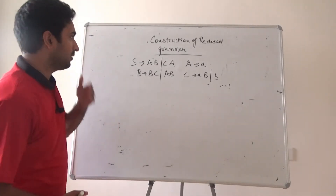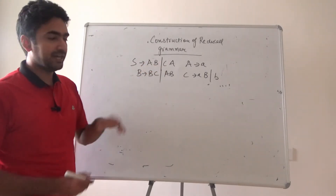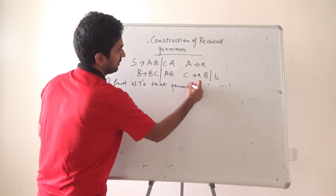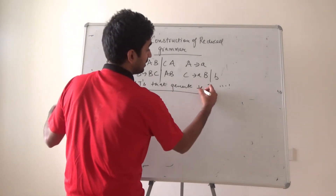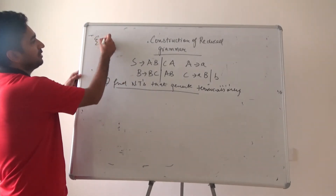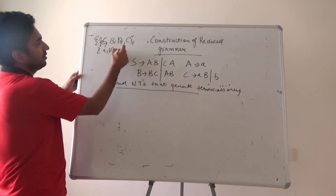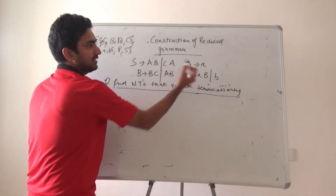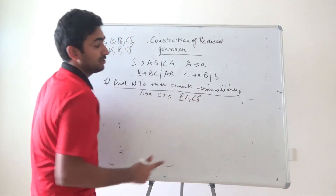Now for the second example: the production rules are S generates A B or C A, and we have to find the reduced grammar. The non-terminals are S, B, A, and capital C. The terminals are a and b, and the starting symbol is S. First step: find non-terminals that generate only terminals. A is generating small a, C is generating small b. So the set becomes {A, C}.